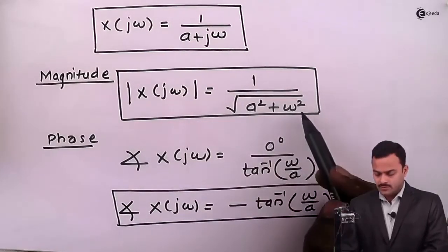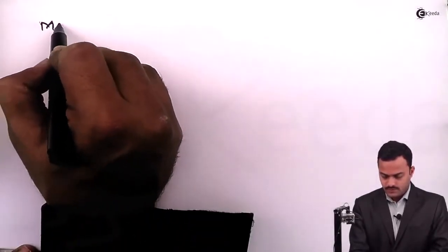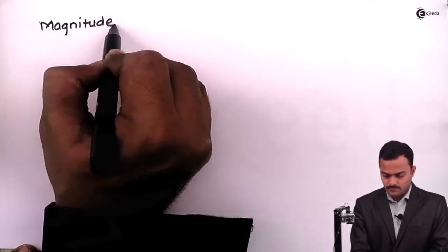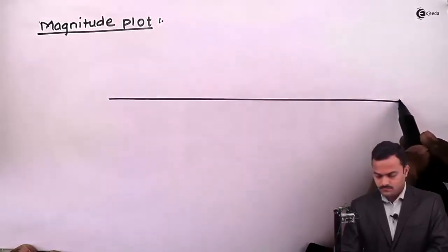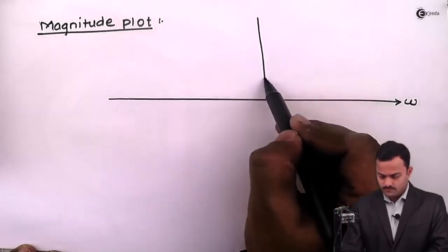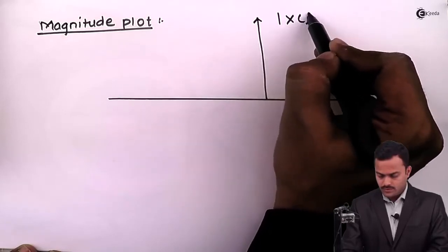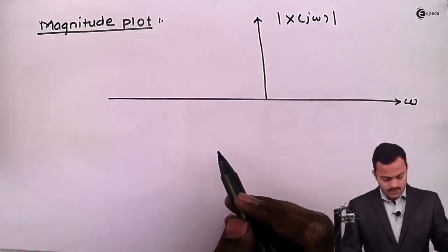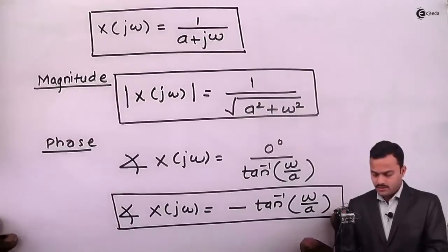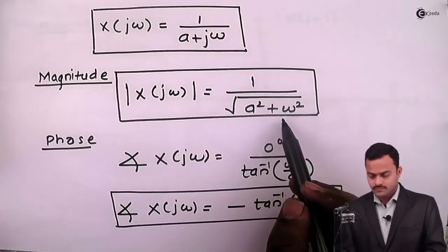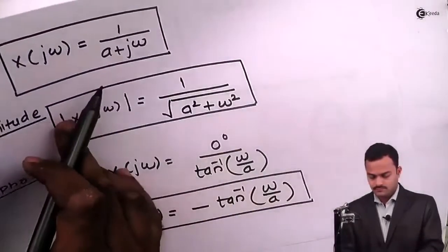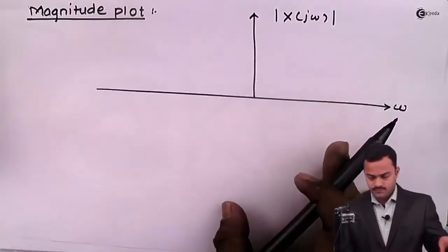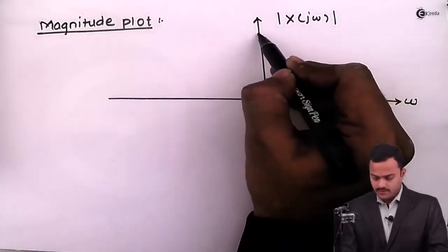Since this magnitude and phase depend upon the value of omega, let's plot them. First, the magnitude plot. Let's do it by trial and error. Suppose omega is 0; we will get the magnitude as 1 by a. So at omega equals 0, the value here is 1 by a.